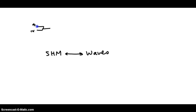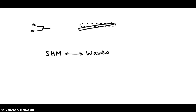If you strike a tuning fork, it produces a sound. This is demonstrating the connection between simple harmonic motion and waves. How is that happening? Let's take a closer look. Zoom in on just one single prong — the bottom one. That bottom prong has a little bit of flex, so it bends down and then bends up. Initially it's right in the middle, but then it bends down, and then it bends back to the middle, and then it bends up. And it oscillates back and forth with simple harmonic motion.